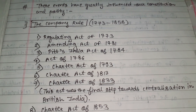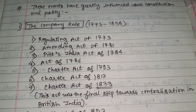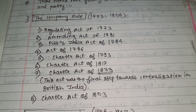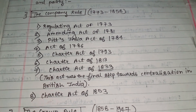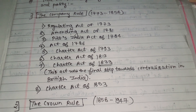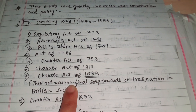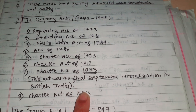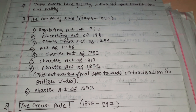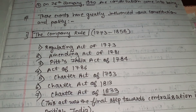The Regulating Act is of 1773, then the Amending Act of 1781, then Pitt's India Act of 1784, then the Act of 1786, then Charter Act 1793, Charter Act of 1813, Charter Act of 1833, and Charter Act of 1833, which was the final step toward centralization in British India, and then the Charter Act of 1853.